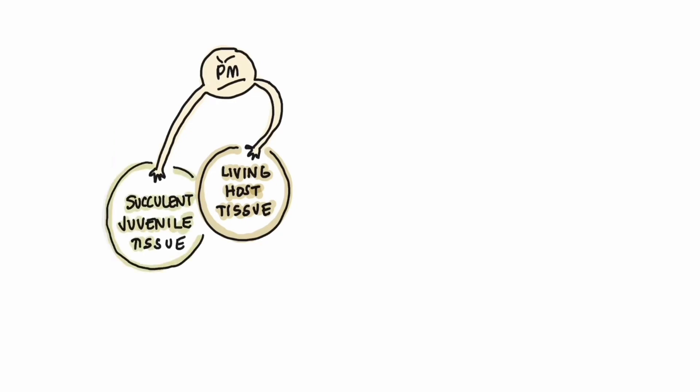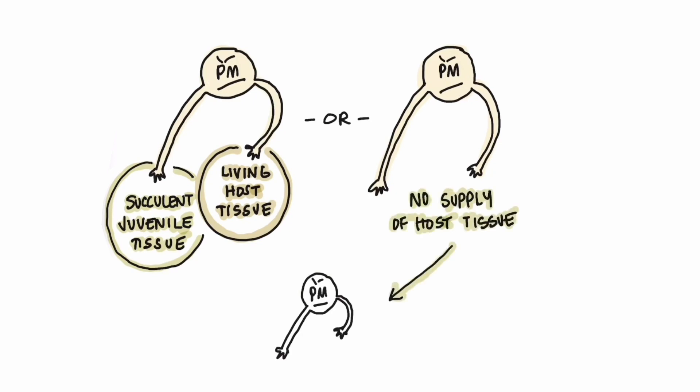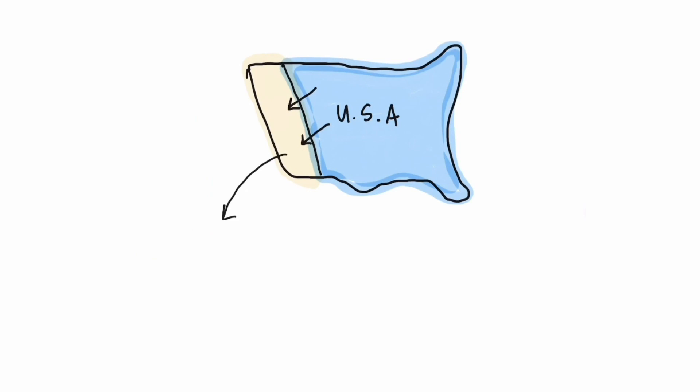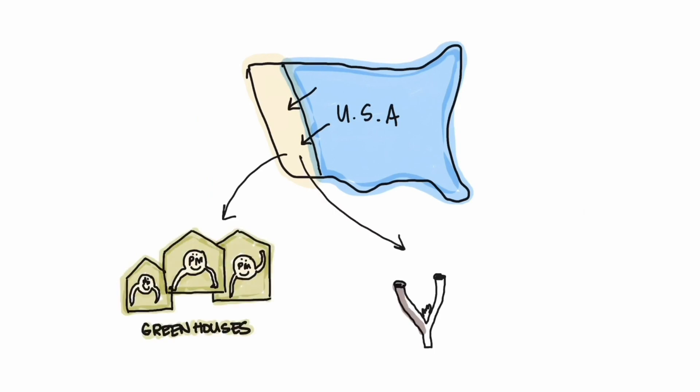Powdery mildews require living host tissue to complete their life cycle. More specifically, they need succulent, juvenile tissue. Without a continuous supply of susceptible host tissue, the fungus actually dies. Because of this, in the western U.S., powdery mildew survives the winter in protected areas like greenhouses or as dormant infections on crown buds.